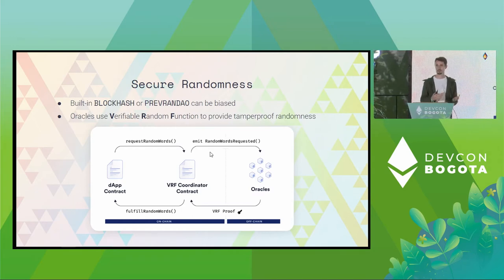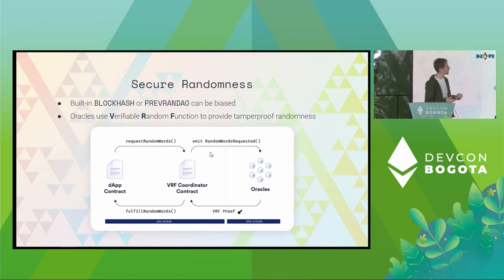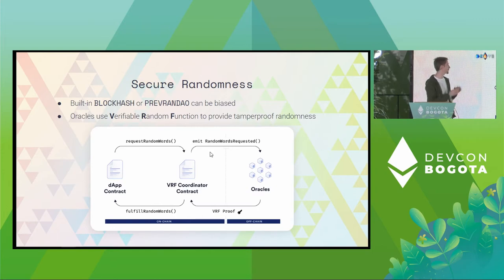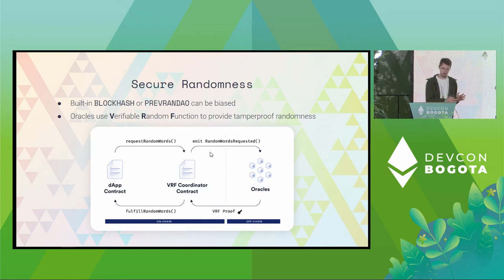The oracles will evaluate the verifiable random function, which is based on deterministic public key cryptography — the oracles actually have no ability to change the output. It's deterministic. So based on a given key pair and a given blockchain state used as the input for the VRF, we will always get the same randomly distributed output value.